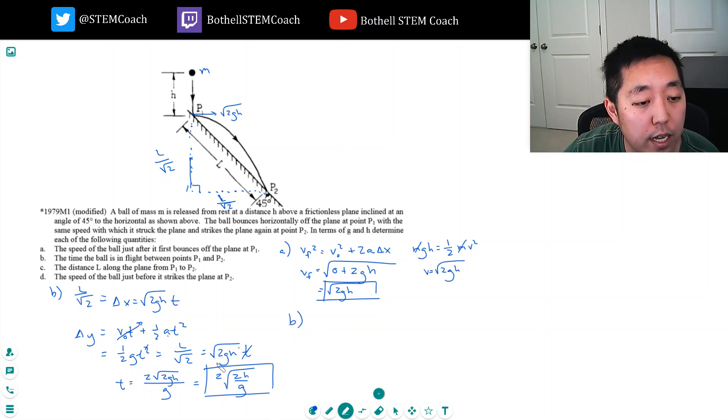And so the distance l is easy to figure out from this equation. This is probably the most direct one. l over root 2 equals delta x, which equals square root of 2gh times t, but now I've solved for the time that's in flight. So l equals, times root 2, so I get 2 root gh times t times, given by two square root of 2h over g.